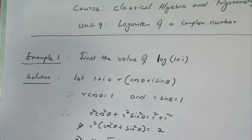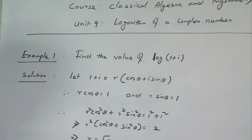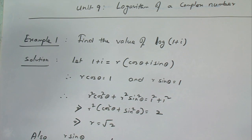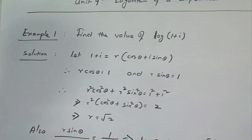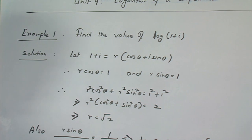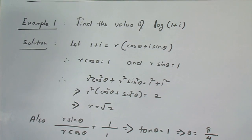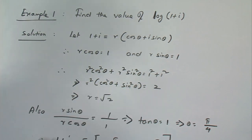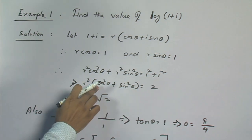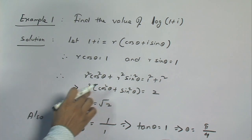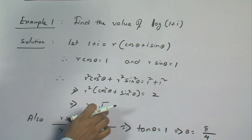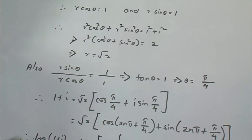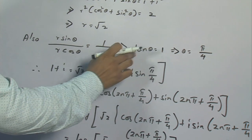To find log(1+i), we write 1 plus i equal to r(cos θ + i sin θ). Comparing both sides: r cos θ equal to 1 and r sin θ equal to 1. Squaring and adding: r²(cos²θ + sin²θ) equal to 1² plus 1² equals 2. So r² equal to 2, giving r equal to √2. Then tan θ equal to r sin θ / r cos θ equal to 1/1 equal to 1, so θ equal to π/4.